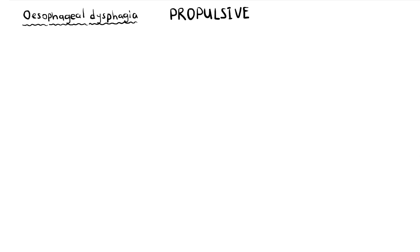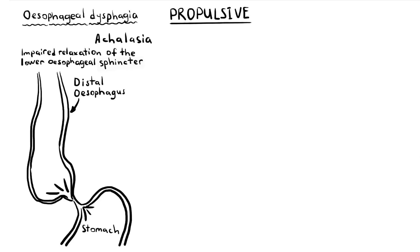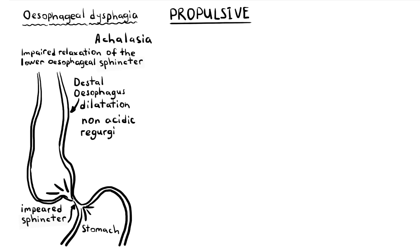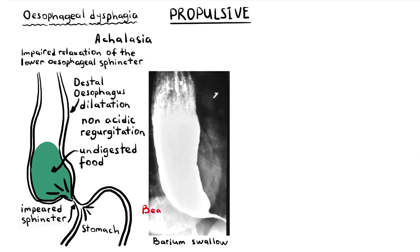Propulsive causes of esophageal dysphagia include achalasia, scleroderma, and rarely hypertensive peristalsis — nutcracker esophagus. Achalasia is due to impaired relaxation of the lower esophageal sphincter, leading to marked dilatation of the distal esophagus and stasis of food. It often presents with non-acidic regurgitation of undigested food. On plain x-ray, a bird's beak sign is pathognomonic, due to tapering of the distal esophagus. Dysphagia to liquids is characteristic of achalasia.